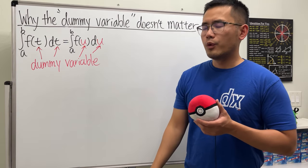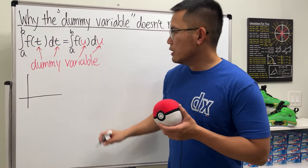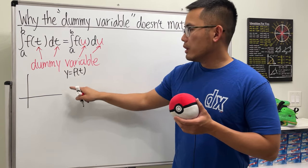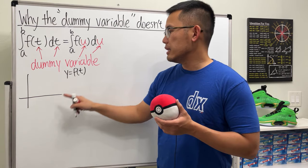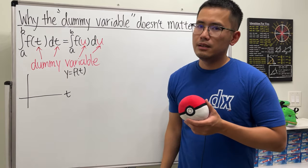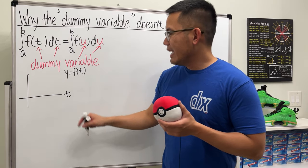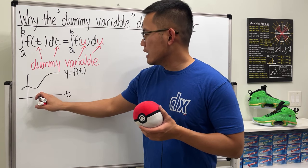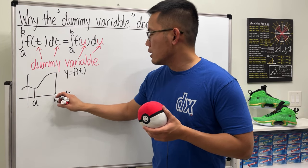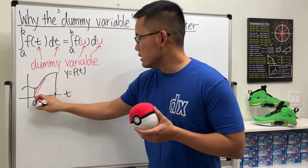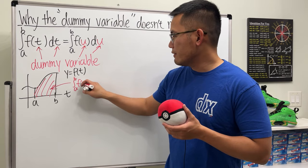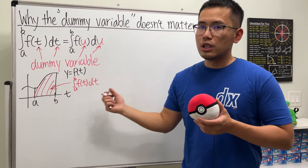Why are they the same? Let's take a look at the picture. If we graph f of t — so y equals f of t — the y-axis is vertical and the horizontal axis is labeled t. Let's say the function looks like this, and we go from a to b. This integral represents this area — the integral from a to b of f of t dt gives us a number.